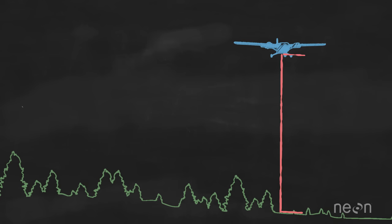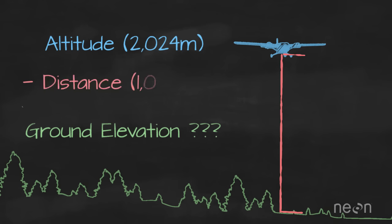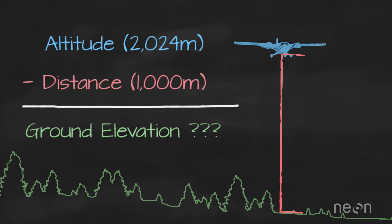But we're not done just yet. To figure out the actual elevation of the ground, we take the plane's altitude — calculated using the GPS receiver — and then subtract the distance that the light traveled to the ground. And that covers the basics of how a LIDAR system uses lasers to measure height.